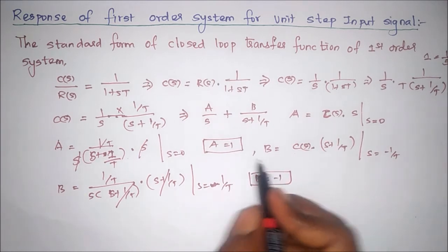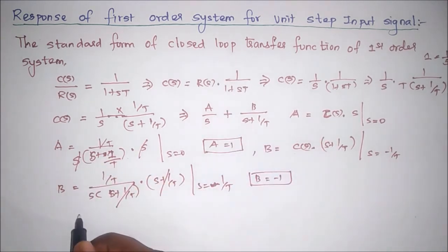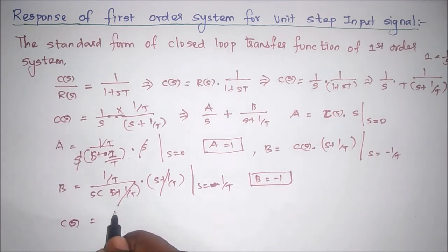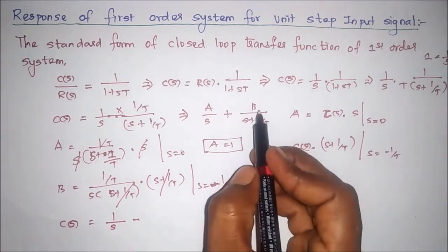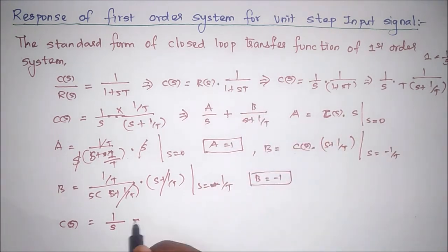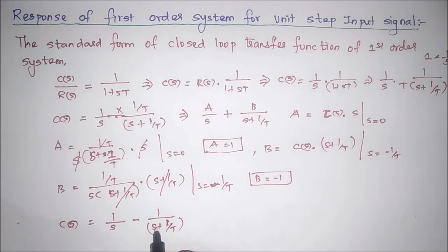Now we substitute the values of A and B into C(s). A equals 1 and B equals minus 1, therefore C(s) equals 1 by s minus 1 by (s plus 1/T). We have now obtained the standard form needed to apply the Laplace inverse transform.